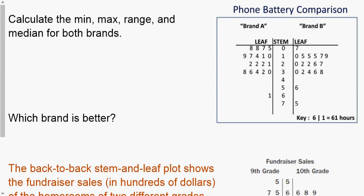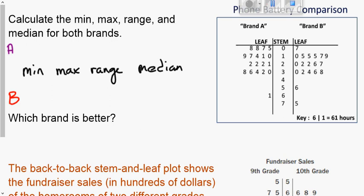It says calculate the min, the max, the range and the median for both brands. We're going to do a little chart here, we're going to do brand A, brand B, and then we're going to calculate each of these things: the min, the max, the range and the median. Go ahead, pause the video and calculate the min, the max, the range, the median for both A and for B.